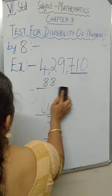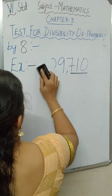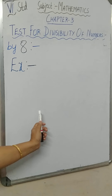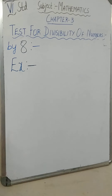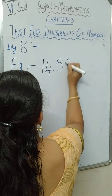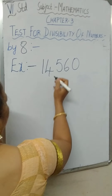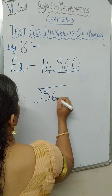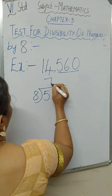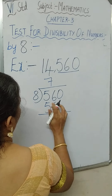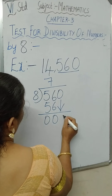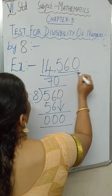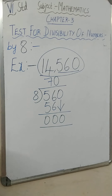Let us see another example: 14,560. Here, the last three digits — the number in the hundreds place, tens place and ones place — are 560. We take 560 divided by 8. 8 sevens are 56, remainder is 0, bring down 0. So 560 is divisible by 8, and therefore the number 14,560 is also divisible by 8.